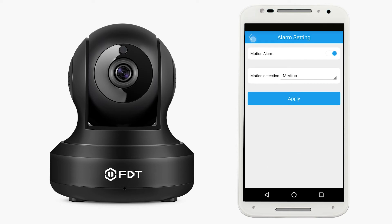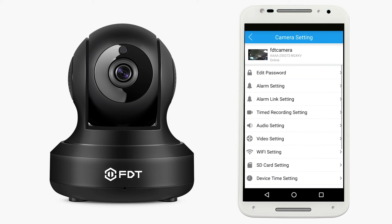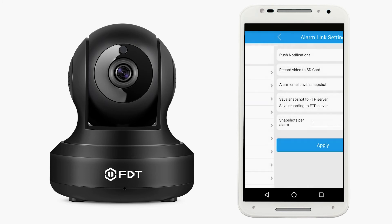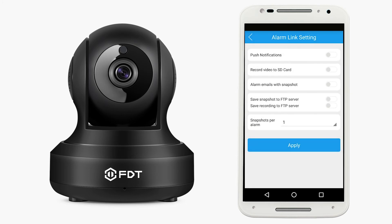Hit the back arrow button to return to the alarm setting menu. Now that the camera will pick up motion detection, we will have to tell it what to do in response. From the camera setting page, tap alarm link setting to enter the alarm link setting menu.